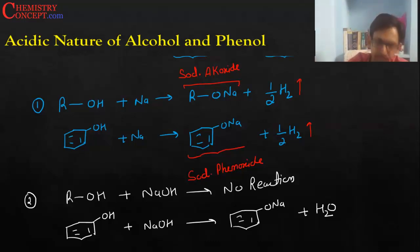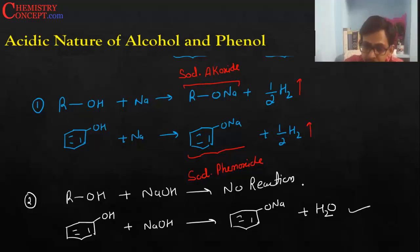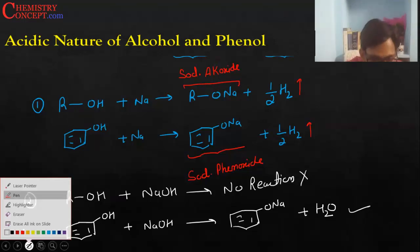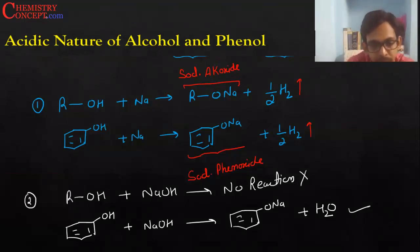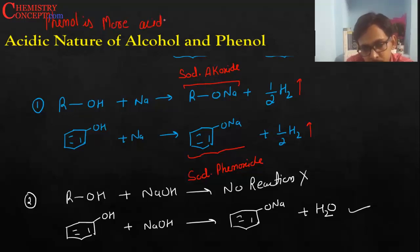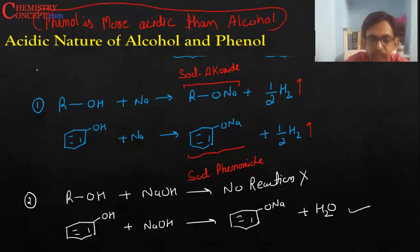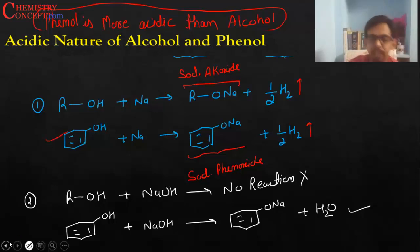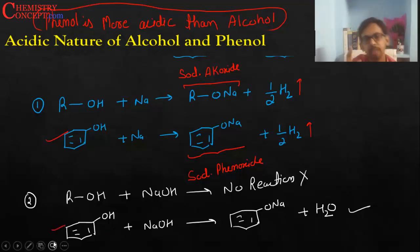So the conclusion is: phenol is more acidic than alcohol. In your exam, if the question asks to give reactions to support the acidic behavior of phenol, we say it is acidic because it shows both reactions — it reacts with sodium to produce hydrogen gas, and it reacts with base to produce salt and water. But alcohol shows only one reaction.